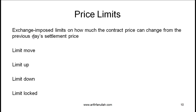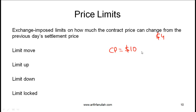This is not always necessary, but an exchange might impose limits on how much the contract price can change from the previous day's settlement price. For example, if the contract price is $10 and the exchange imposes a limit of $4, then the maximum price on a given day is $14 and the minimum is $6.